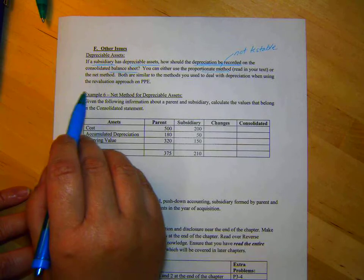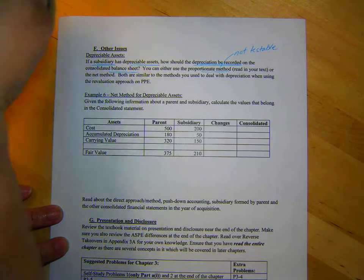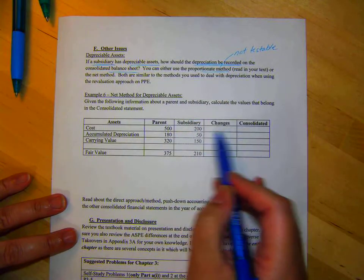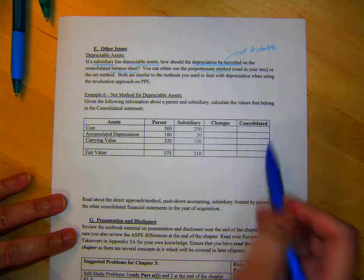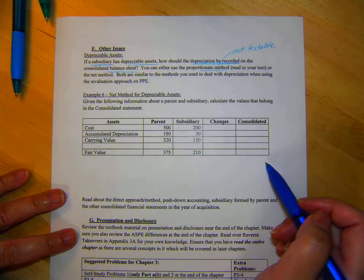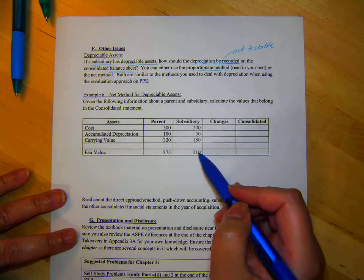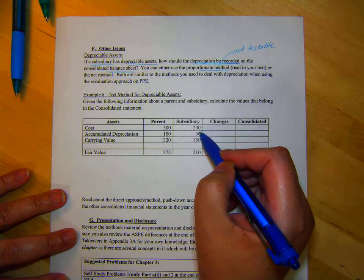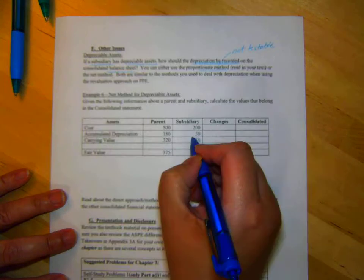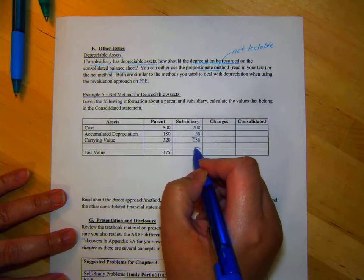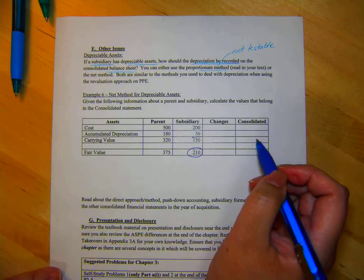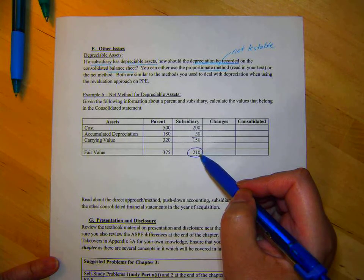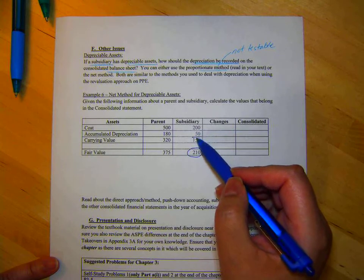So example 6. What I mean here, like what the issue is, is that let's say here's our parent, here's our sub, then we put our changes in our debits and credits, and then we do the consolidated by adding or subtracting. Well, the problem is we have to write the sub's assets to fair value. So here's our sub, 200 for the cost, minus 50 accumulated depreciation is the carrying value, or the book value of 150. We know the fair value is 210.